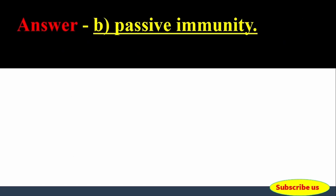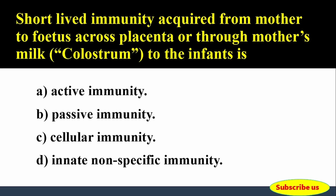Answer: Option B, Passive immunity. Short-lived immunity acquired from mother to fetus across the placenta, or through mother's milk (colostrum) to the infant, is called passive immunity.